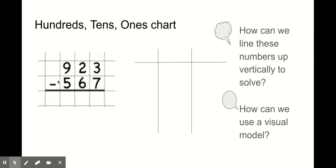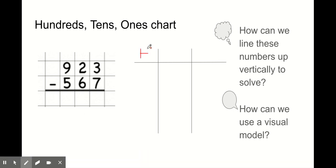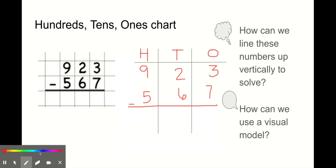923 minus 567. Remember how we're going to set this up in a hundreds, tens, and ones chart. The larger number always has to go first in a subtraction problem. So 923 minus 567. Do I need to regroup? Yes, I will need to regroup because 3 is less than 7.